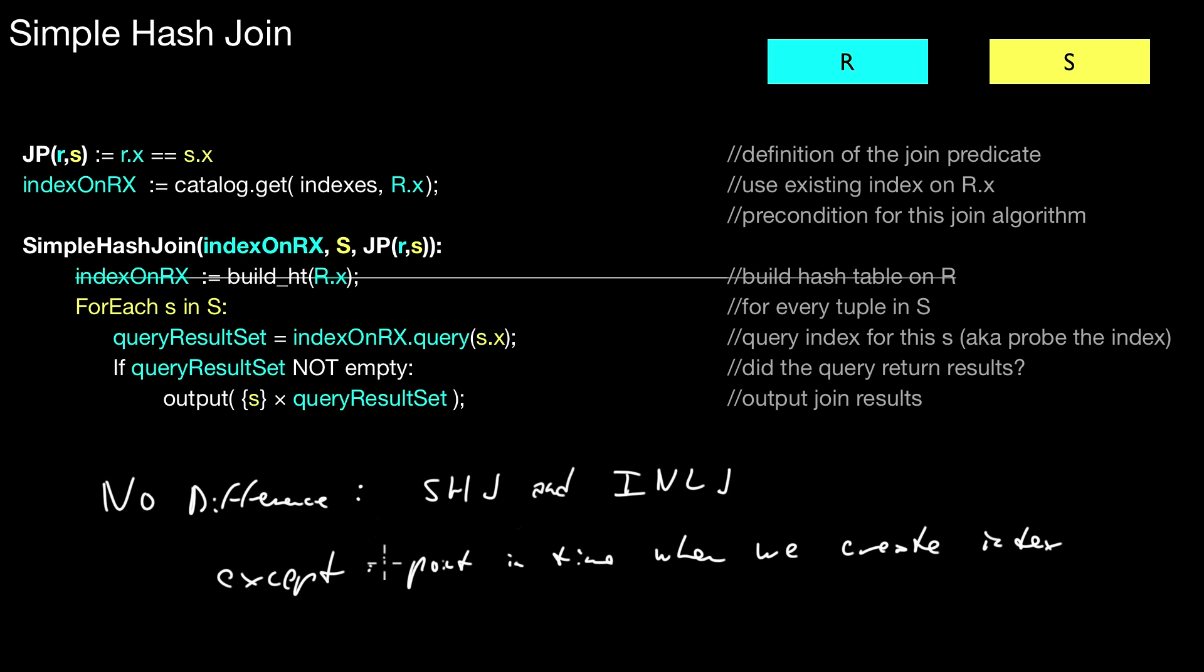In index nested loop join, so let's write it down like that. That index type for simple hash join is a hash table versus an index nested loop join is any index. And that makes it clear that simple hash join is just a special case of index nested loop join. That is important to keep in mind.